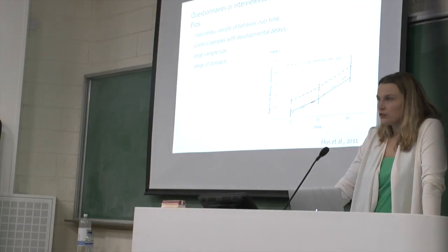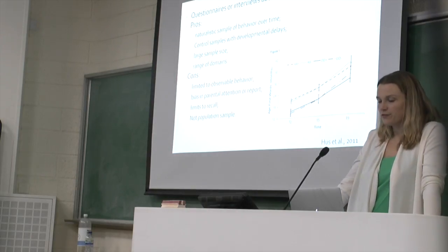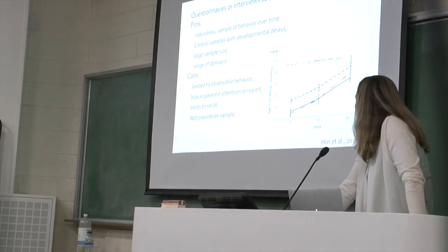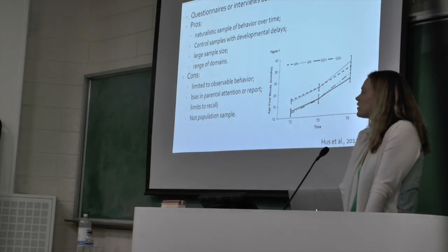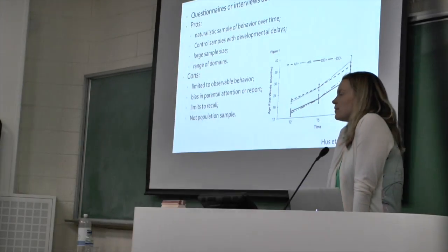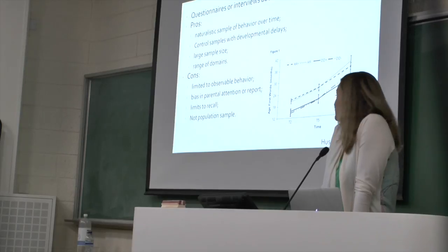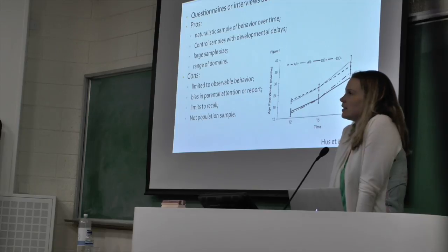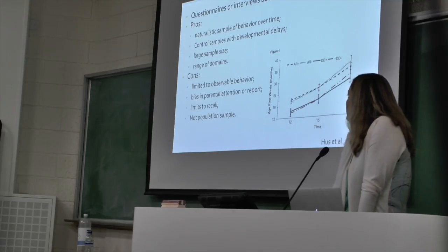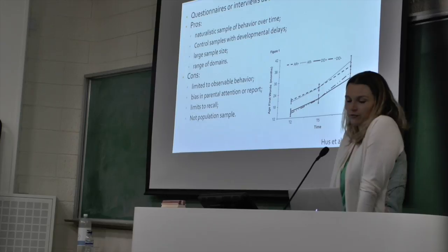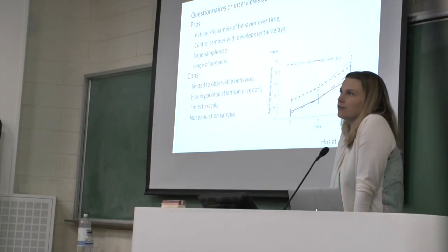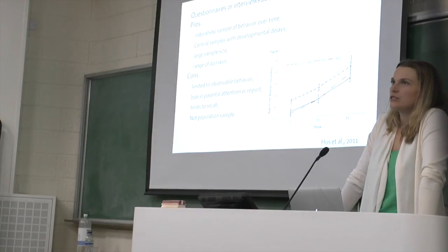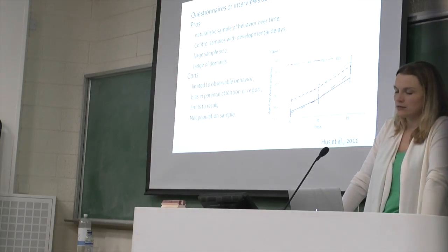This approach has lots of strengths, but one challenge is that memory isn't always accurate. In one sample, parents of kids with autism were asked when their child first used language. When asked when the child was 2, they said around 15 to 18 months. When asked again when the kids were 9, parents remembered it being more like 3 or 3 and a half. There are definitely memory biases that make it difficult to interpret precise timing from retrospective studies.